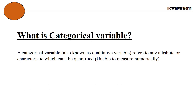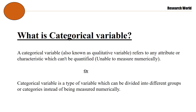A categorical variable, also known as qualitative variable, refers to any attribute or characteristic which can't be quantified — unable to measure numerically. Categorical variable is a type of variable which can be divided into different groups or categories, instead of being measured numerically.